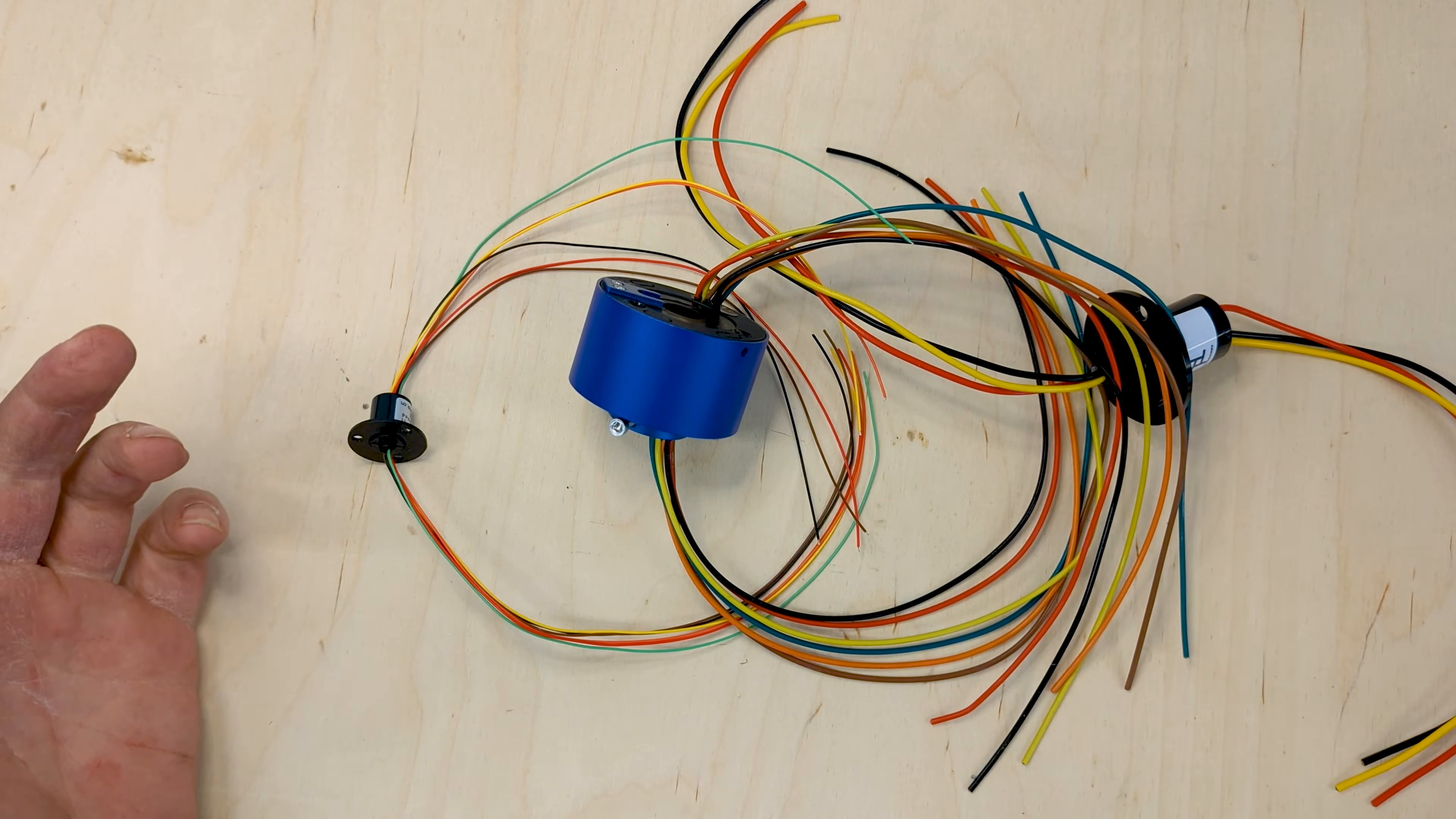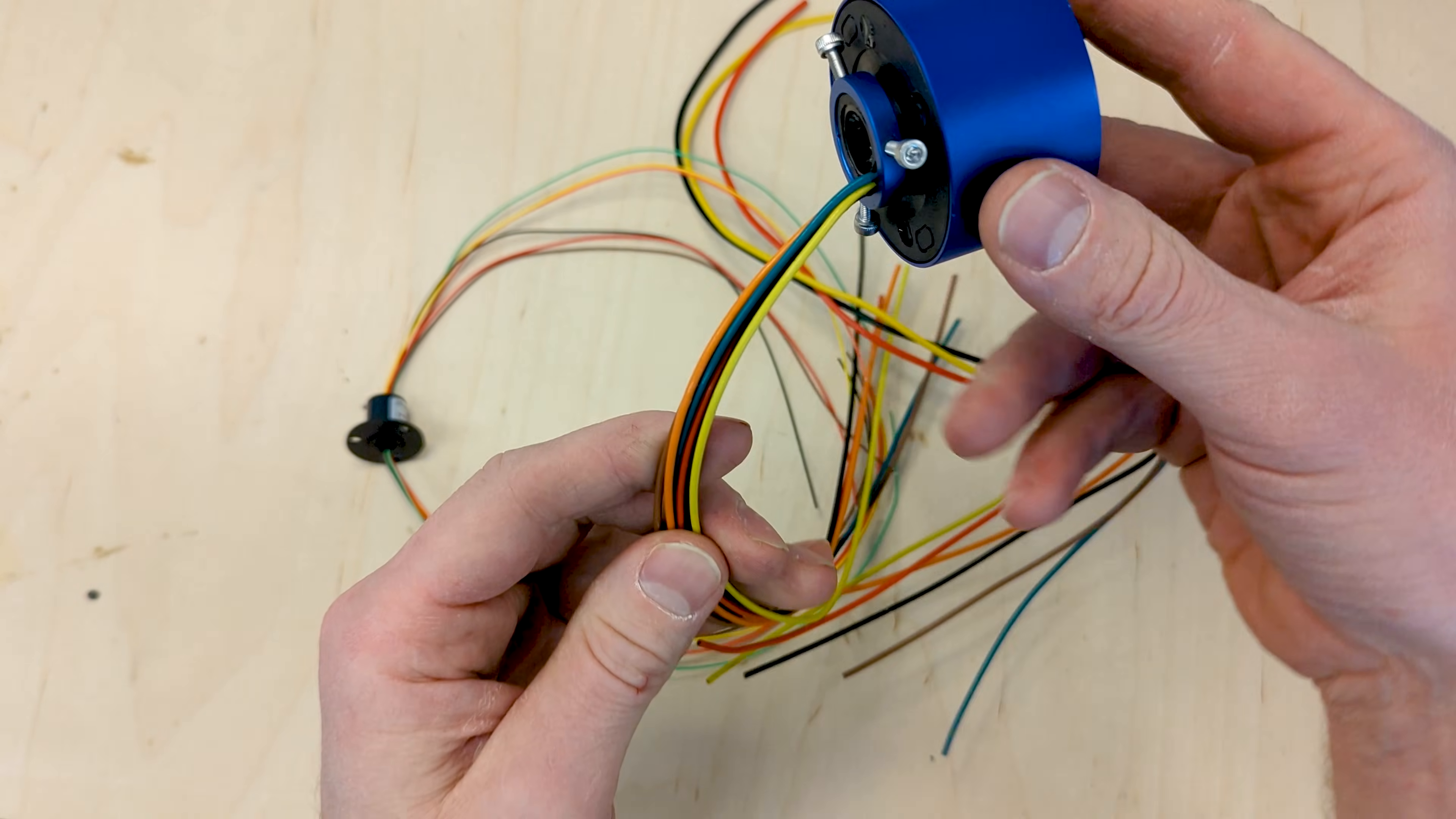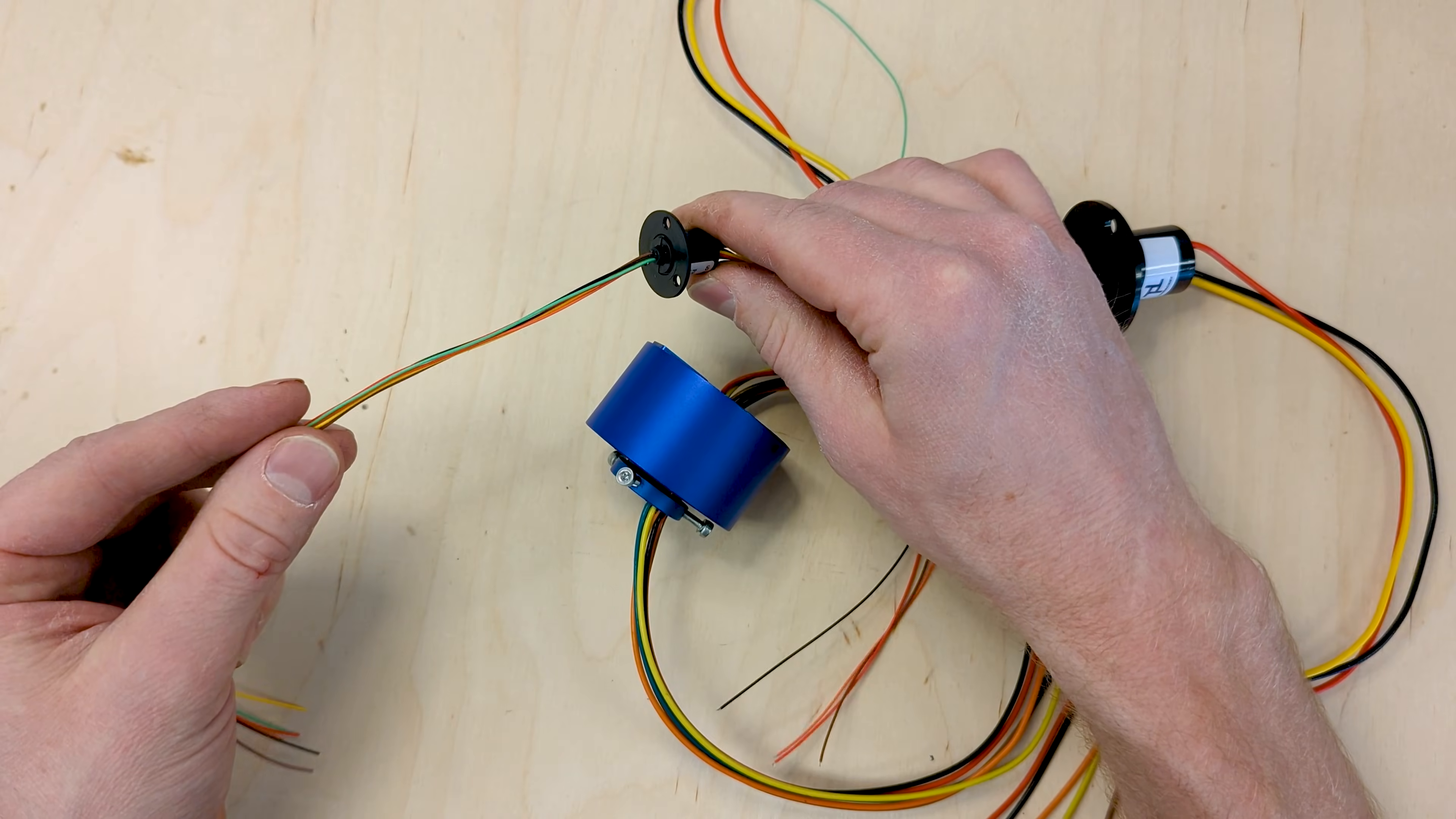What is a slip ring? A slip ring is a device that allows you to have circular connections of wires. Here I have three different slip rings of different wire gauges.